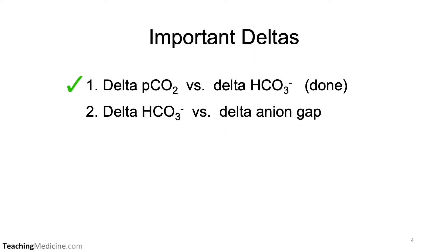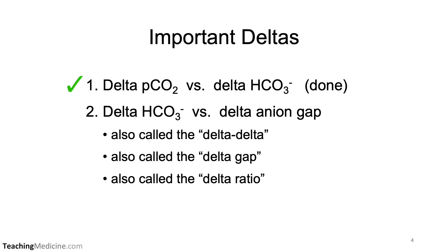We've already looked at the delta pCO2 compared to the delta bicarb, and this is how we determined whether compensation was partial or full. What we are going to talk about now is the delta bicarb versus the delta anion gap. This is also called the delta-delta, or the delta gap, or the delta ratio — we're going to refer to it simply as the delta-delta.